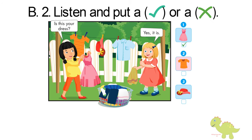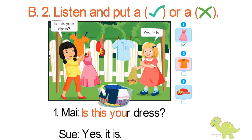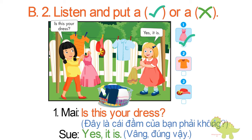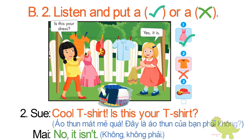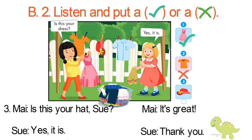B. Two. Listen and put a tick or a cross. One. Is this your dress? Yes, it is. Two. Cool t-shirt. Is this your t-shirt? No, it isn't. Three. Is this your hat, Sue? Yes, it is. It's great. Thank you.